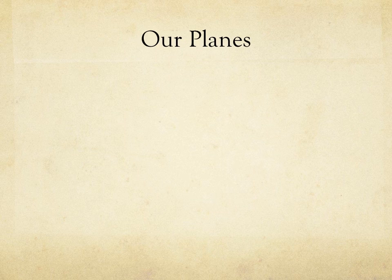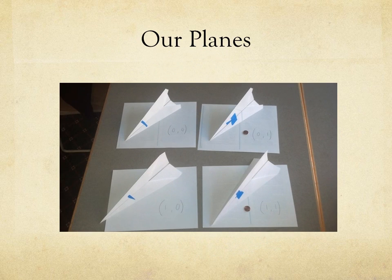Here are our planes shown in the picture. The top row corresponds to 0 in length, which is 9 inches long. The bottom row corresponds to 1 in length, which is 11 inches long. The left side corresponds to 0 in weight, meaning there is no penny included in the design, while the right side corresponds to 1 in weight, meaning there was a penny included.